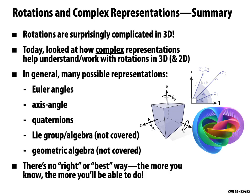In summary, rotations are surprisingly complicated once we go from 2D to 3D. 2D is pretty trivial; 3D is extremely rich. Today we looked at rotations from the complex viewpoint and talked about how working with these representations can simplify expressions, make your life easier, give you better interpolation, and all sorts of nice things. In general, there are many possible representations: Euler angles, axis-angle, quaternions, and things we haven't gotten into yet — Lie groups, Lie algebras, geometric algebra.